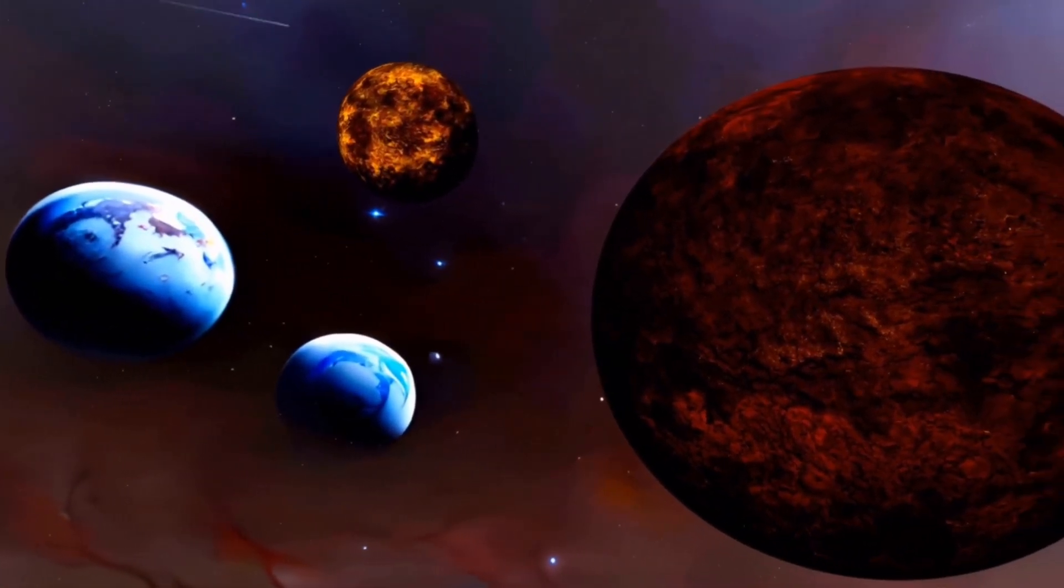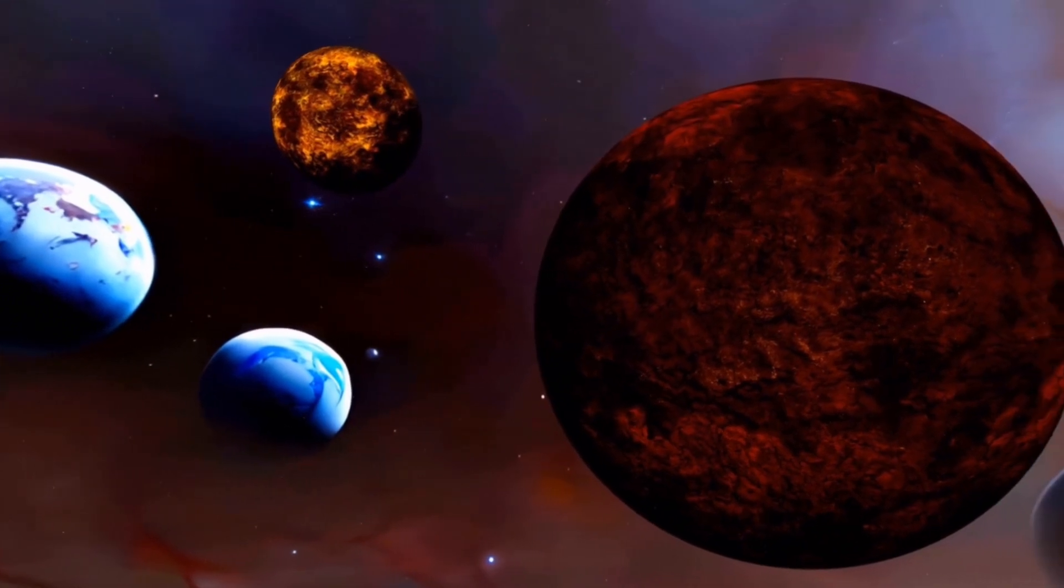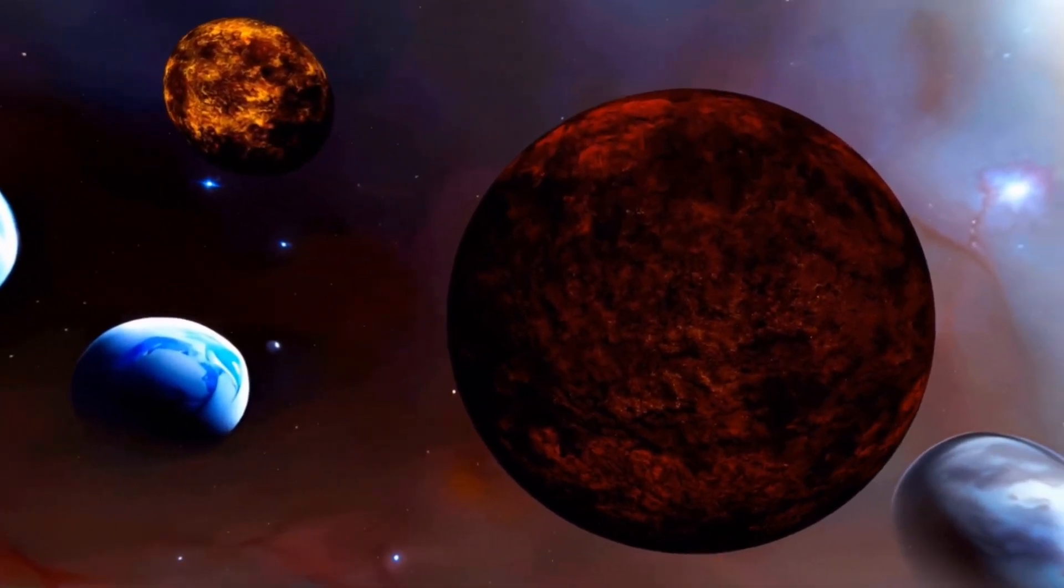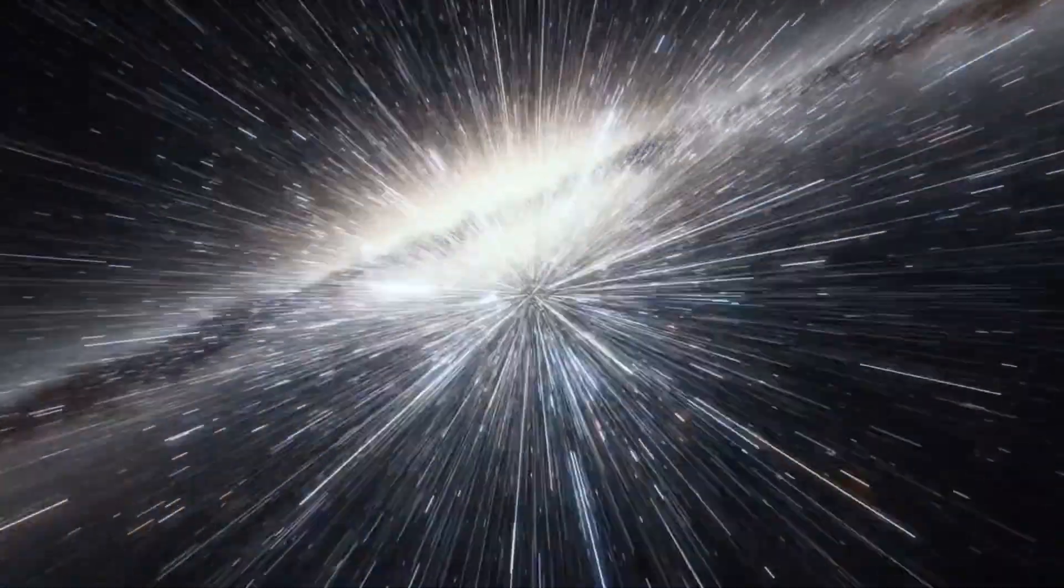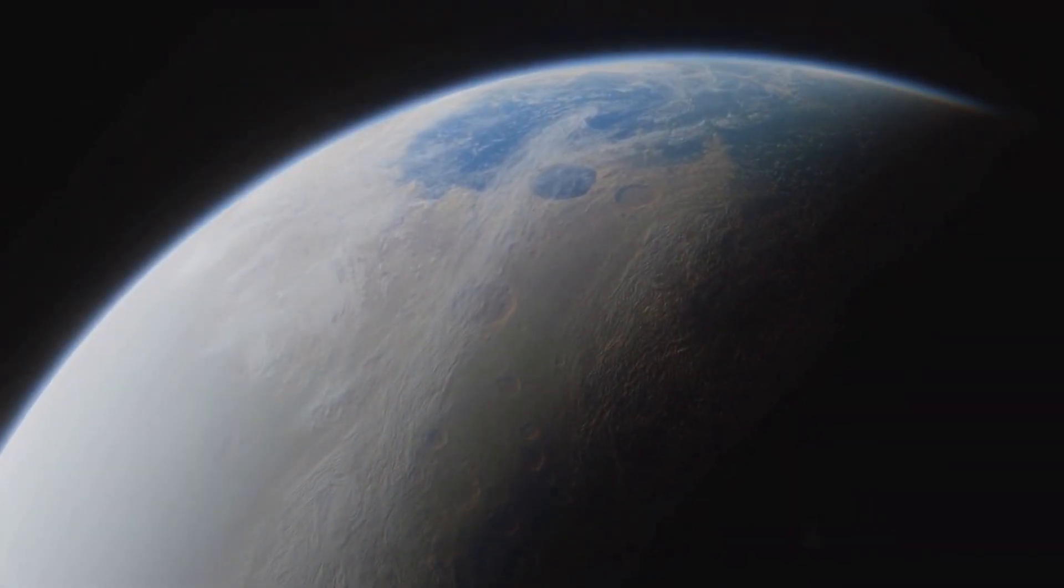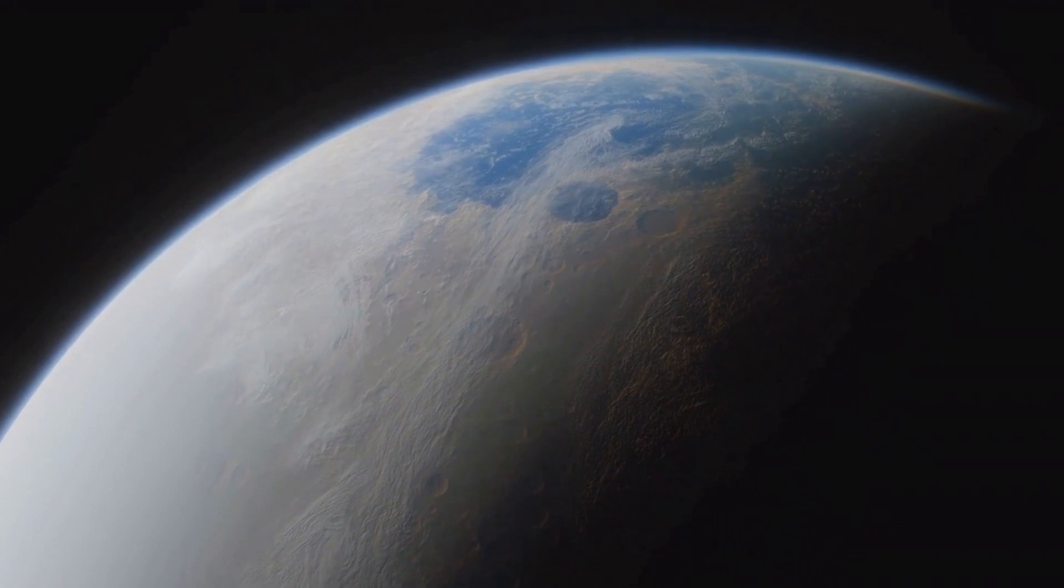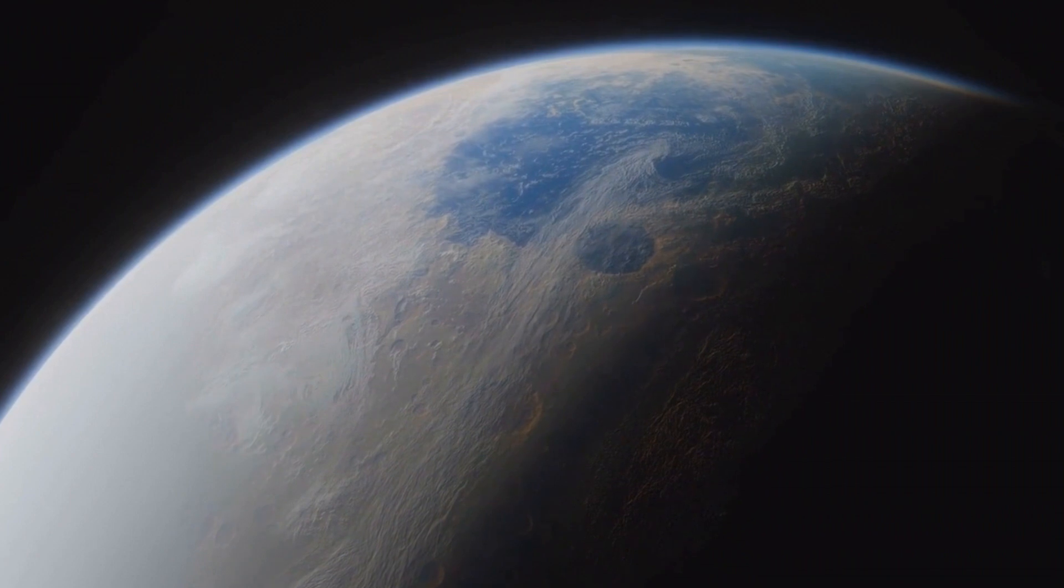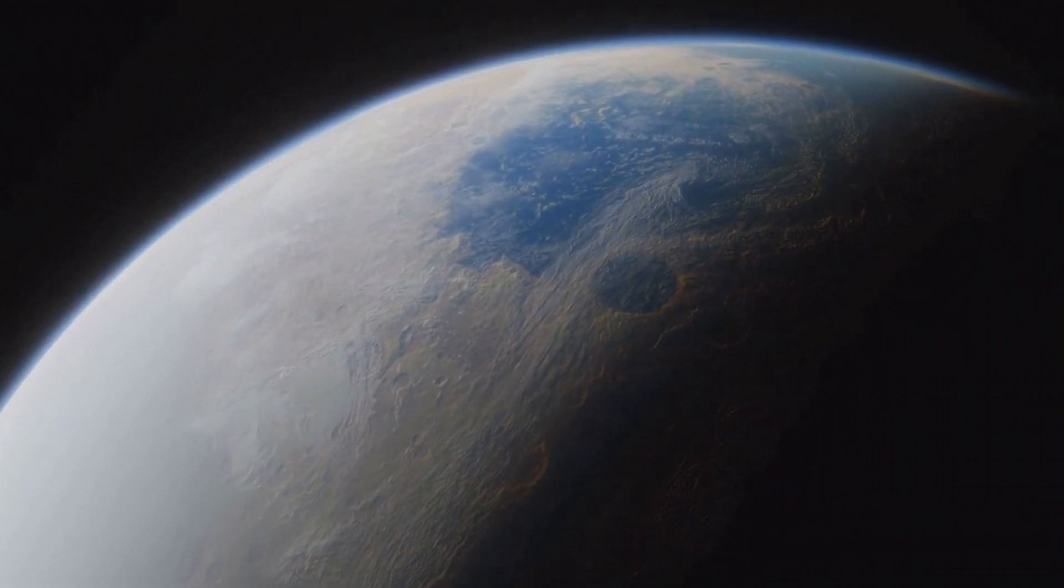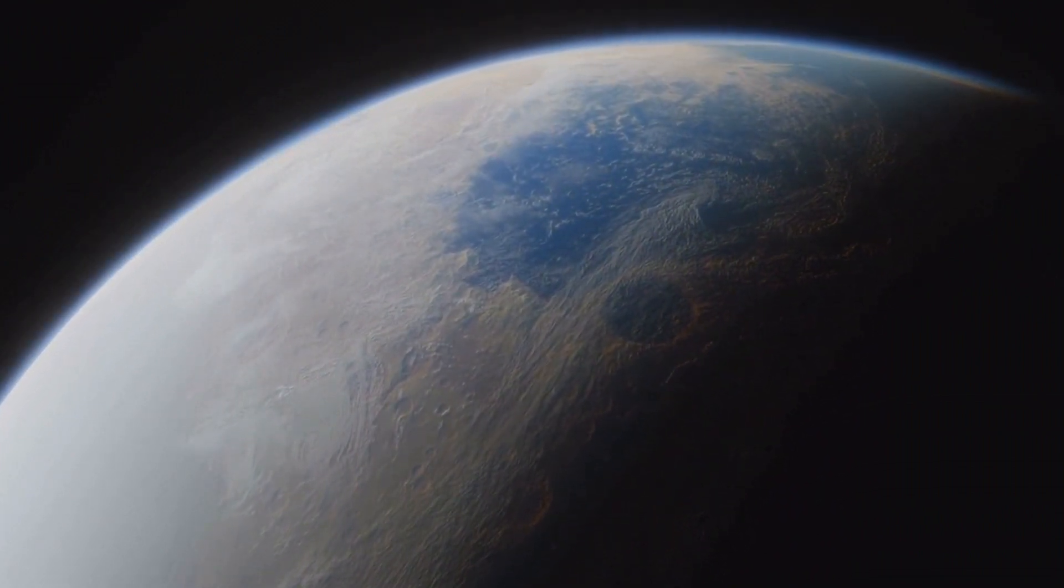The possibility of a ninth planet in our Solar System, while tantalizing, remains a subject of ongoing research and investigation. The intriguing evidence from the peculiar orbits of distant Kuiper Belt objects and theoretical simulations have sparked the imagination of astronomers and space enthusiasts alike. If Planet Nine does exist, it would be an elusive and enigmatic neighbor, adding another layer of complexity to our understanding of the Solar System's formation and evolution. As technology advances and our knowledge of the cosmos expands, the mystery of Planet Nine may one day be unraveled, revealing the existence of a celestial wanderer that has remained hidden for millennia.